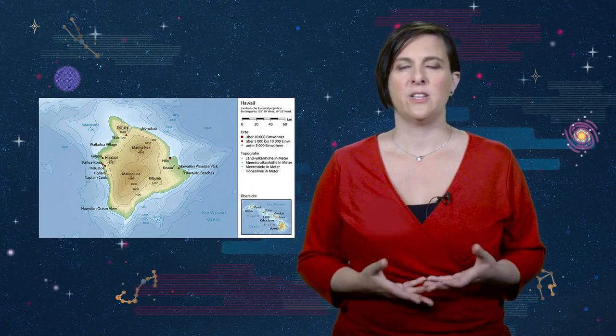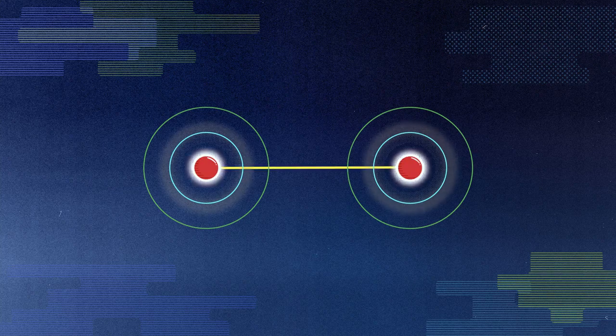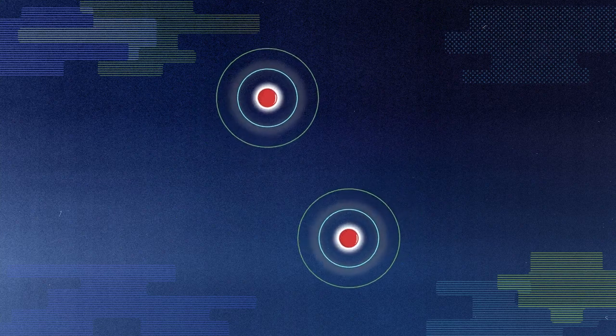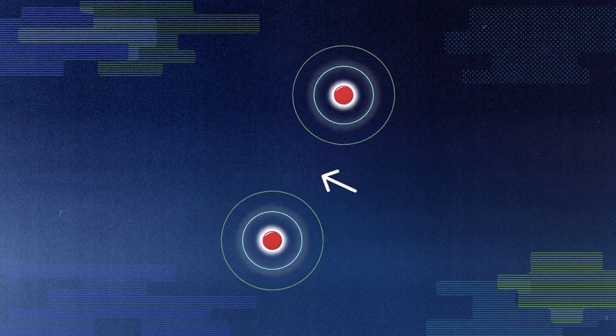How does this change when another star is nearby? When two stars are in a binary system, the gravity of the two will interact. These two stars would be in orbit around one another, or rather around a common center of mass.